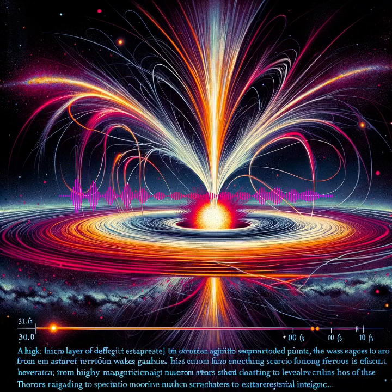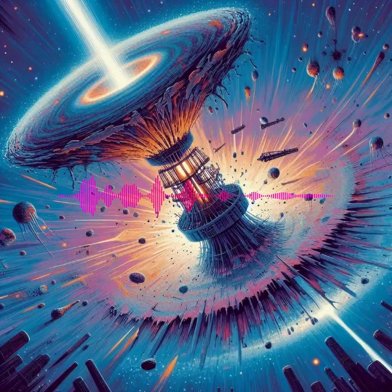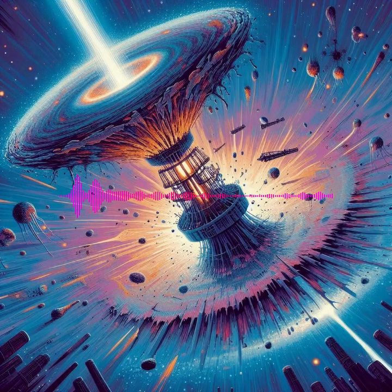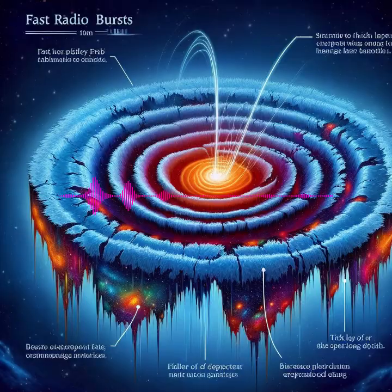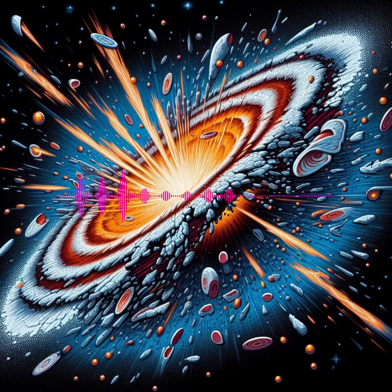Fast Radio Bursts — FRBs. These brief but intense bursts of radio waves originate from distant galaxies and are one of the most enigmatic phenomena in astrophysics today. Theories about their sources range from highly magnetized neutron stars to speculative notions such as extraterrestrial intelligence, making them a hot topic for both their mystery and their potential to probe the distant universe.